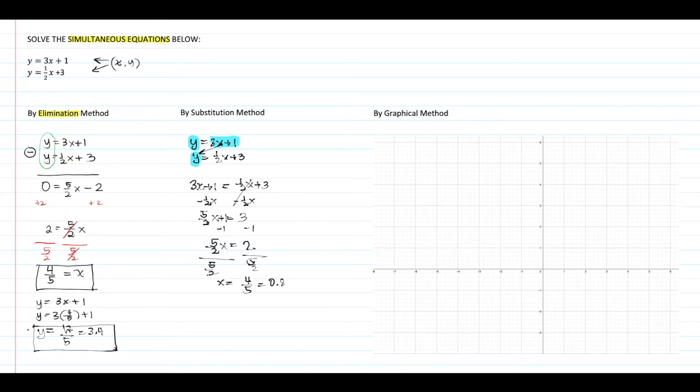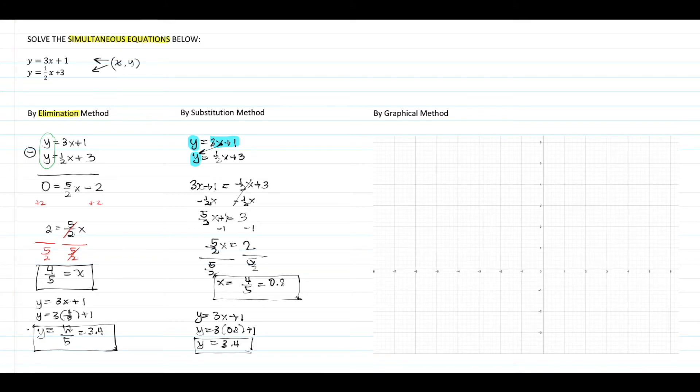We can substitute this x value into one of the two equations given to find the value of y, and y equals 3.4. If you have noticed, either method gives the same value. Anyway, you may choose which one is easier, and you can use the other method to check. Elimination and substitution methods are both algebraic in nature.